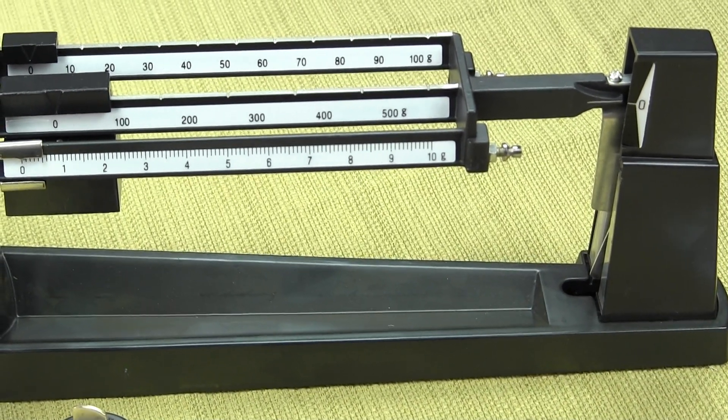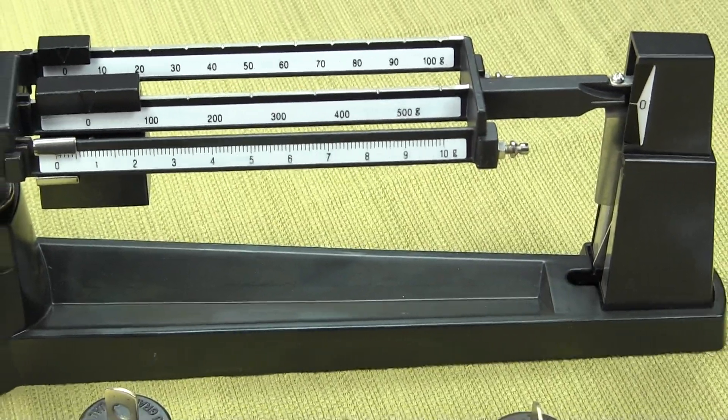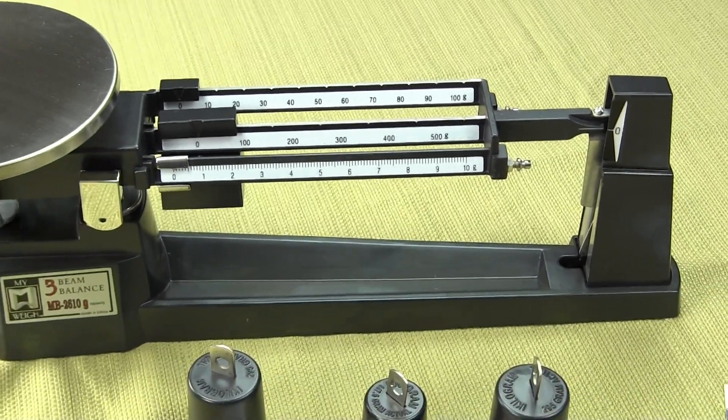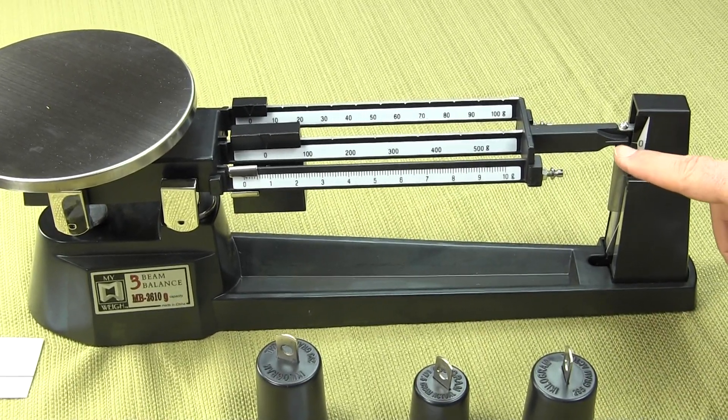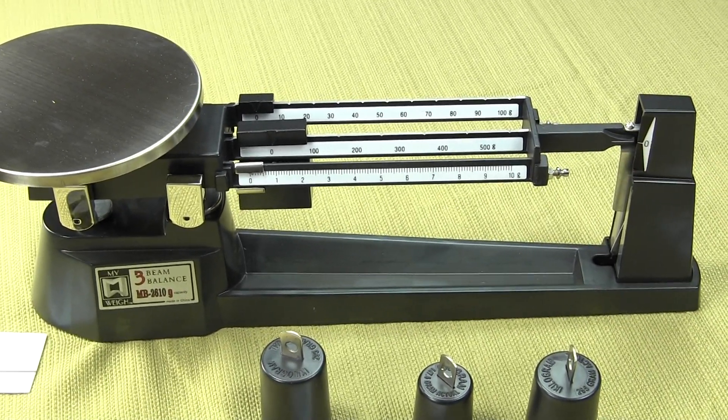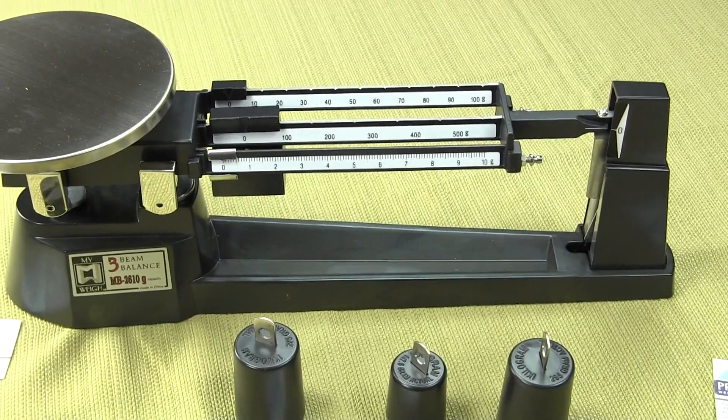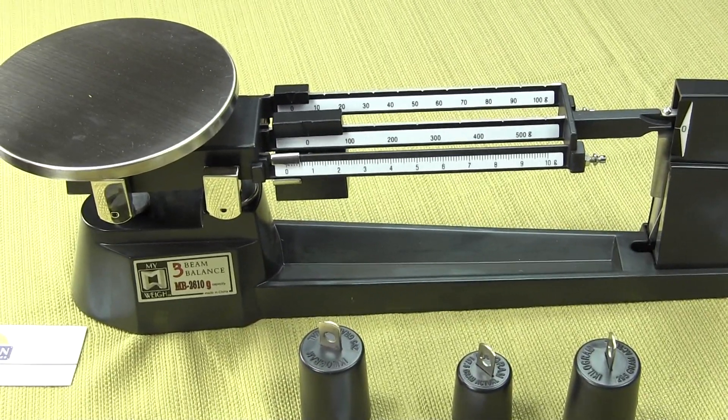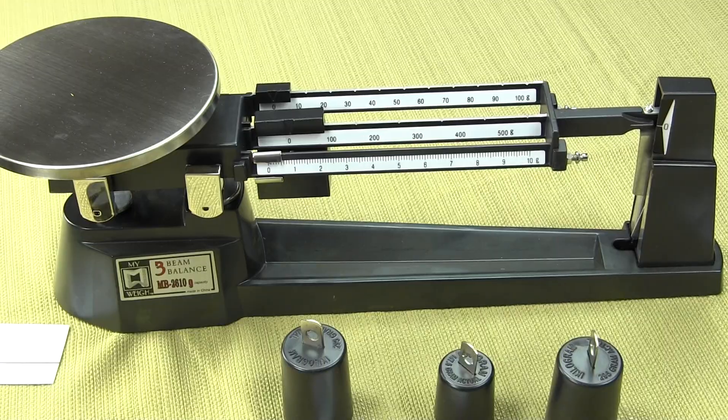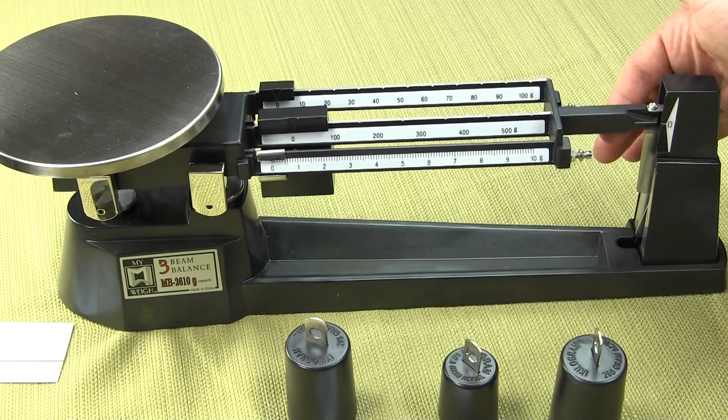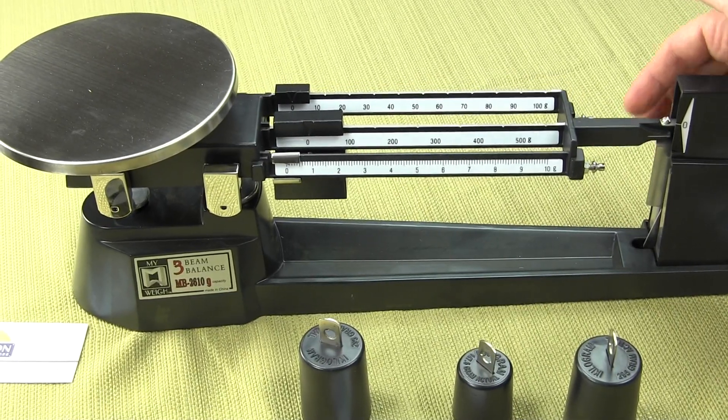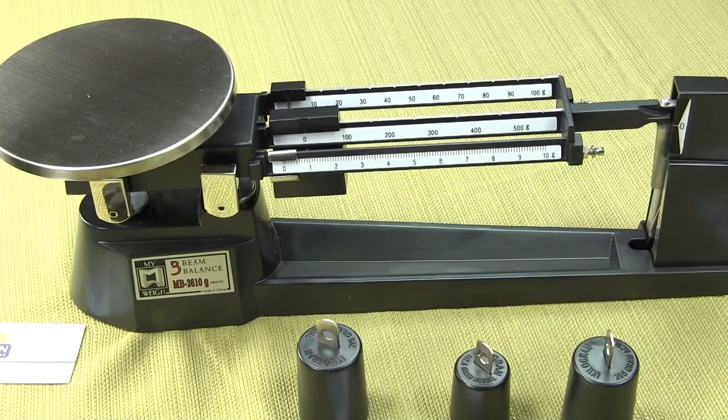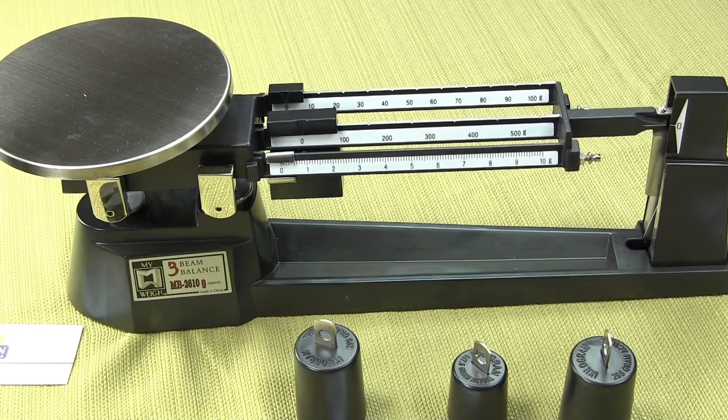That's how you use the adjustment curl knob to balance the three beam balance. The hashtag at the very end here is lined up with a hashtag that's on the beam. The way that curl knob works is if you turn it clockwise, the arm will end up going up higher. If you turn it counterclockwise, the arm will go lower.